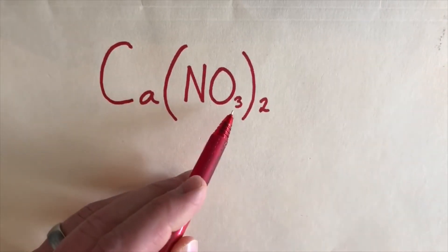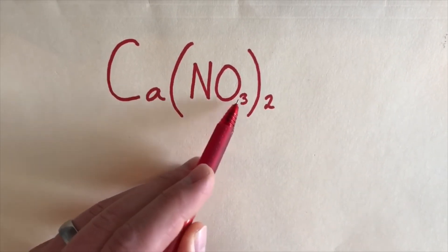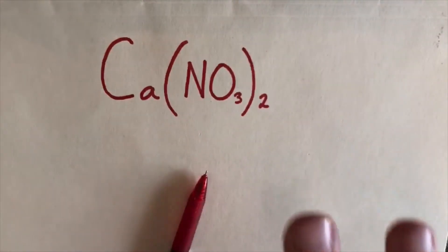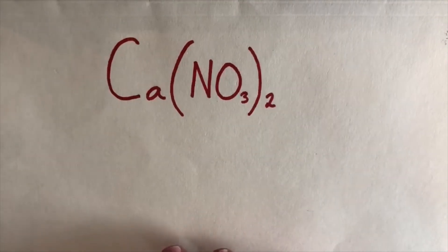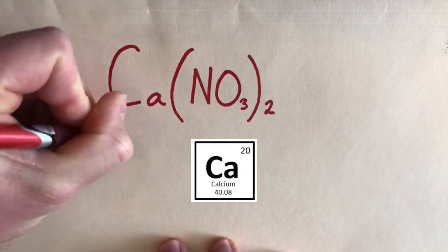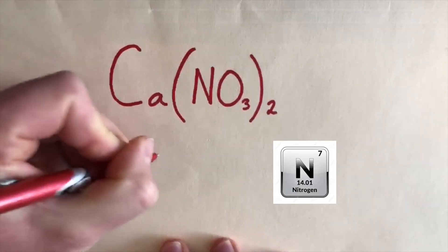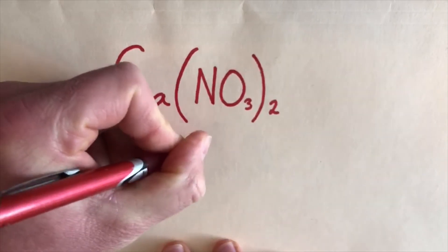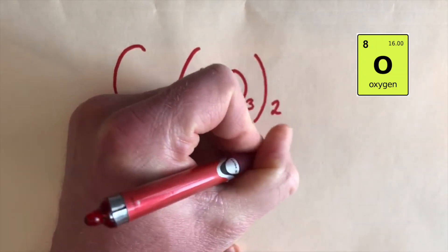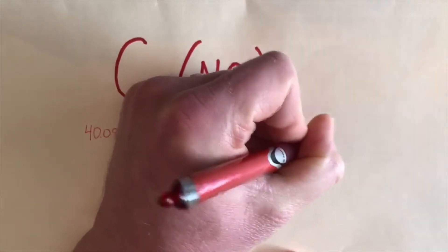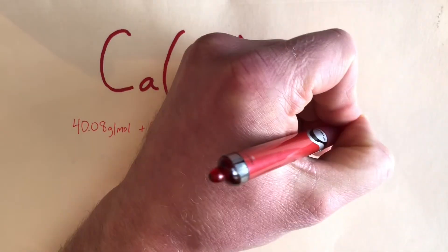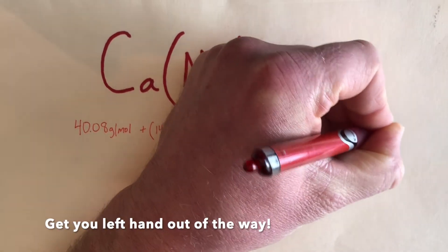Same thing with oxygen — there's a subscript 3 next to it, so there are 3 oxygens, but times 2, giving 6 oxygens in this total ionic compound. So we use our periodic table: calcium's molar mass is 40.08 grams per mole, plus nitrogen's molar mass, 14.01 grams per mole, times 2. And we add that to oxygen's molar mass, 16.00 grams per mole, times 6 because there are 6 oxygens. Add those all up and we get 164.01 grams per mole. Booyah!